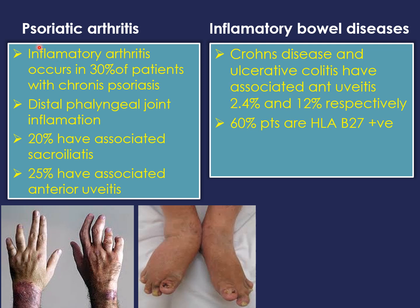Psoriatic arthritis is a form of arthritis affecting some people with chronic psoriasis. Inflammation typically occurs in the distal phalangeal joints, causing swollen fingers and toes, deformities in hands and feet, foot pain from tendon and ligament inflammation, low back pain from spondylitis, and sacroiliitis. Twenty-five percent of patients with psoriatic arthritis can develop anterior uveitis.